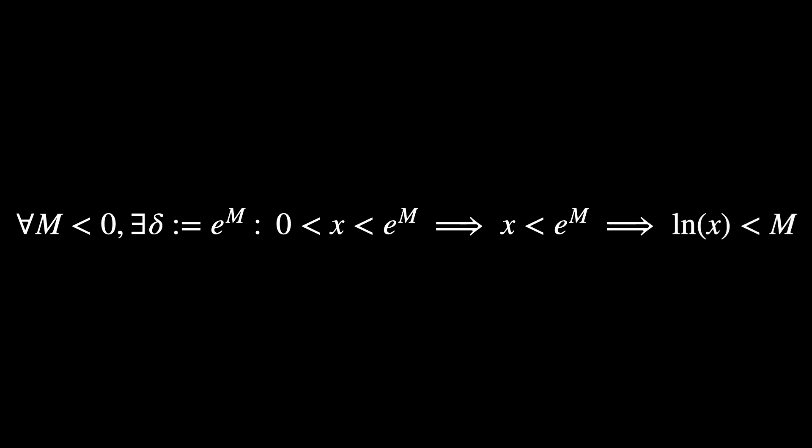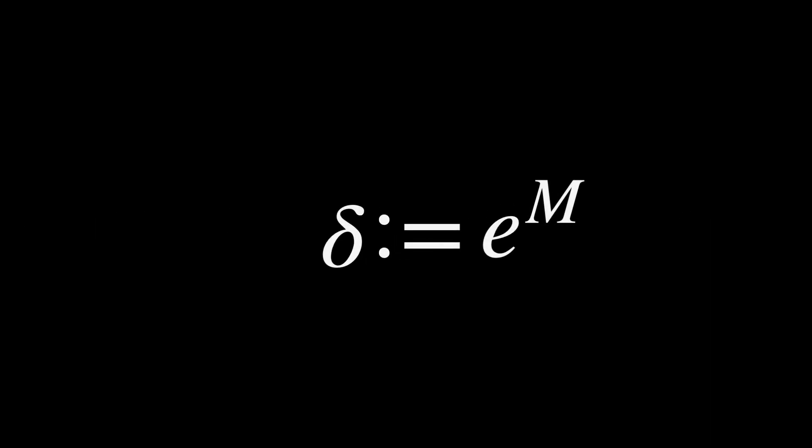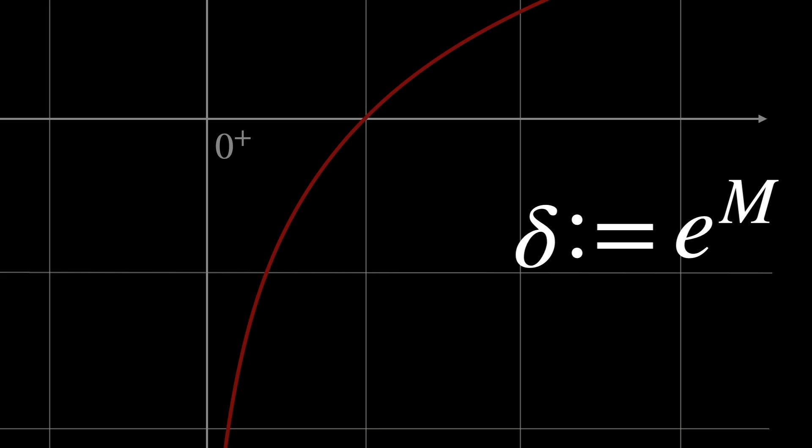And this implies that, now taking the natural logarithm in both sides, ln of x is less than m. So, indeed, delta equals e to the power of m is one of the right choices that guarantees that no matter how low the value of m is, there is always a delta, small enough, that let us find a point below m in the vertical axis.